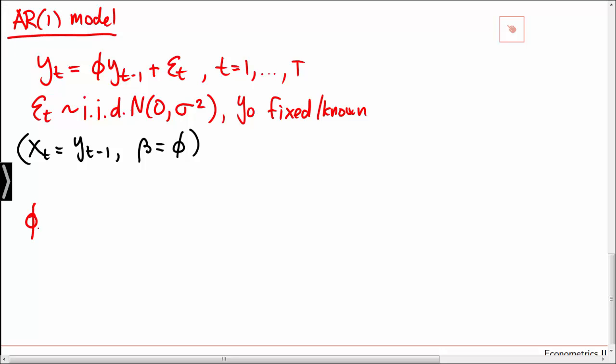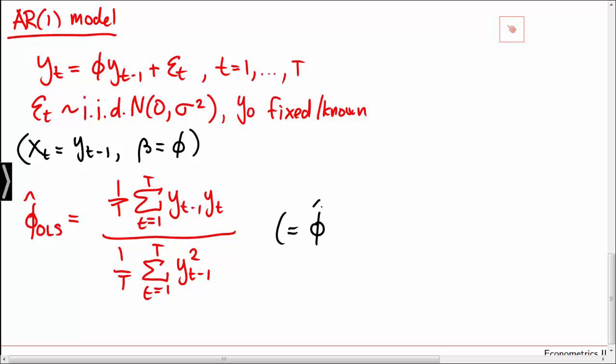Moreover, we have that our OLS estimator for phi is equal to the average of yt minus 1 times yt divided by the average of yt minus 1 squared. Note here that due to the fact that epsilon t is assumed to be normally distributed, the OLS estimator coincides with the maximum likelihood estimator for phi.